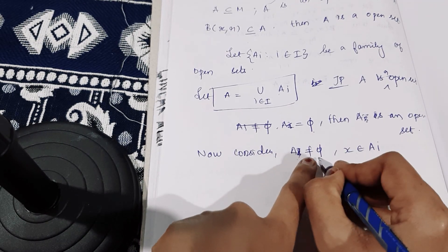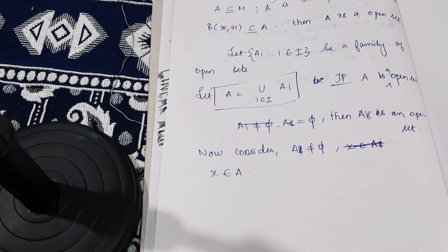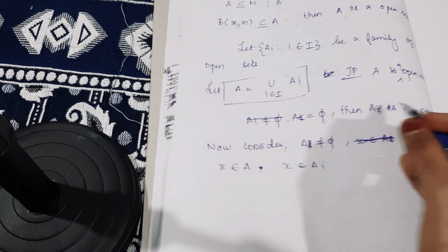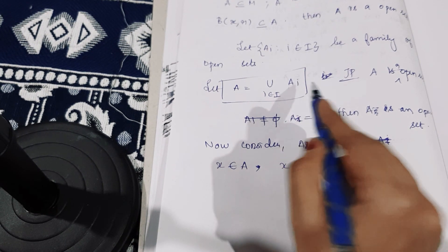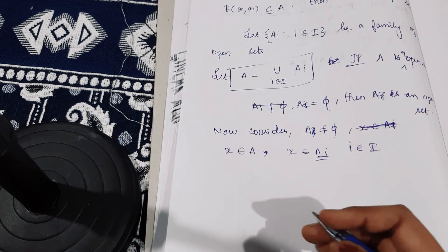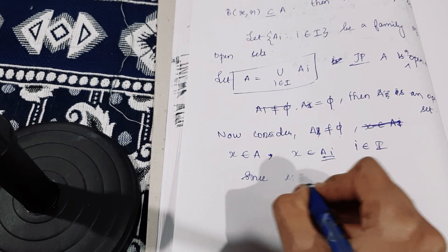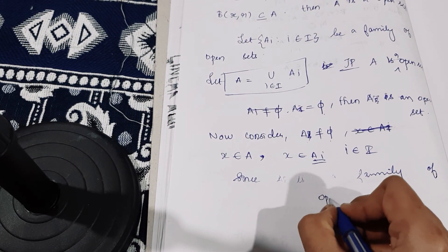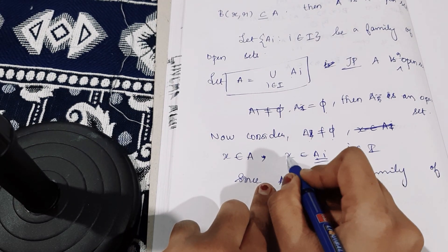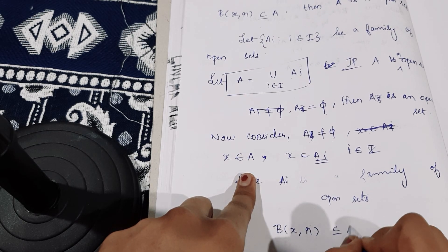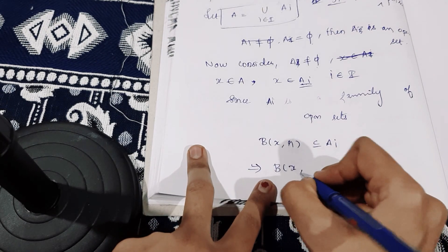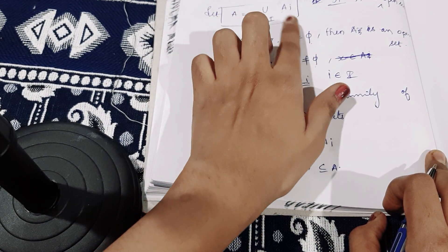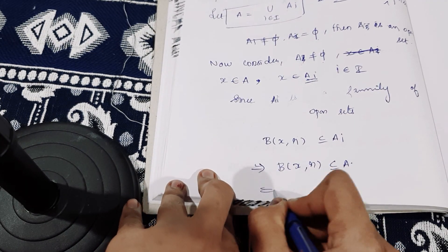Consider A is non-empty; therefore take X belonging to A. Since A is the union of the family of open sets, X also belongs to A_I for some I in I. Since A_I is a family of open sets, by the definition of open set, the open ball B(X, R) is a subset of A_I. That implies the open ball B(X, R) is also a subset of A, since A is the union of A_I. Therefore A is an open set.